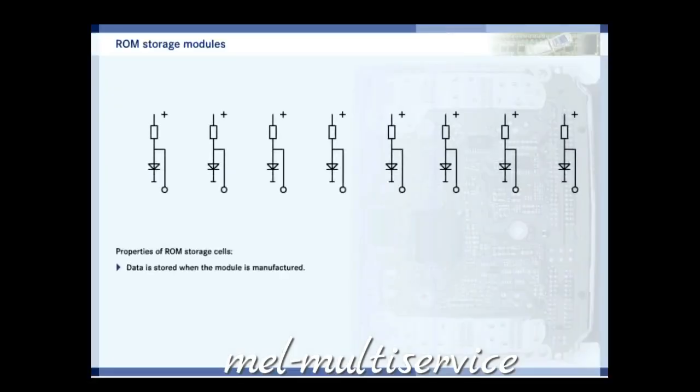ROM units receive their data when the storage module is produced. The diodes in the storage cell are either deliberately destroyed by surge voltage or left intact. An intact diode behaves like an activated transistor. The cell might contain a zero. The destroyed diode has a high resistance, like a transistor in the off state, and therefore counts as a one. The contents of the memory cannot be changed, and remain intact even when the power supply is interrupted.